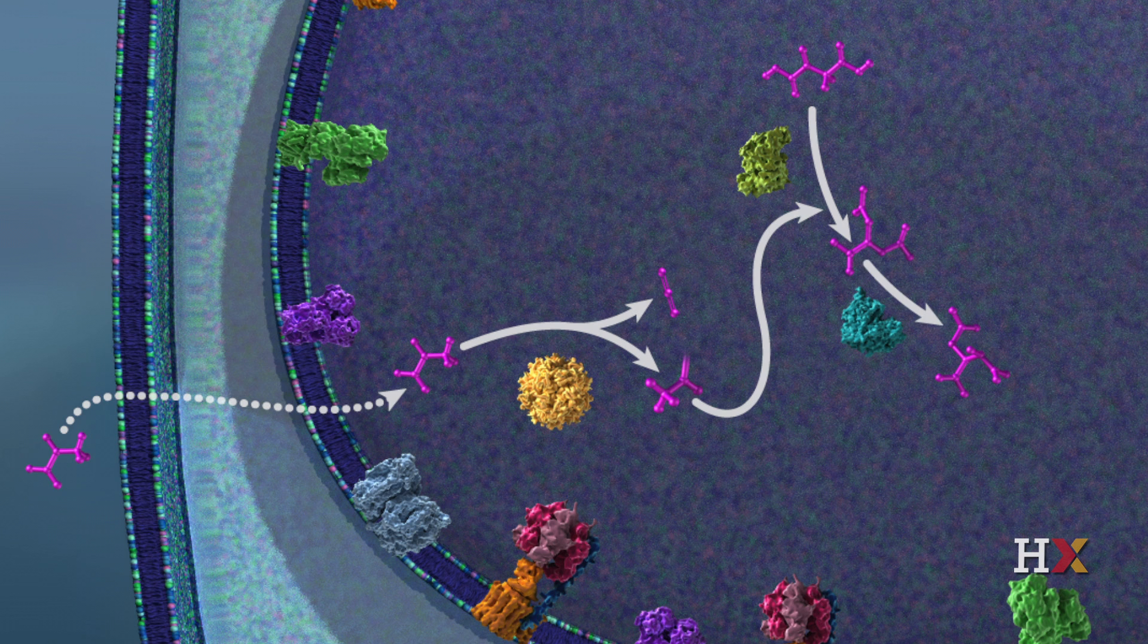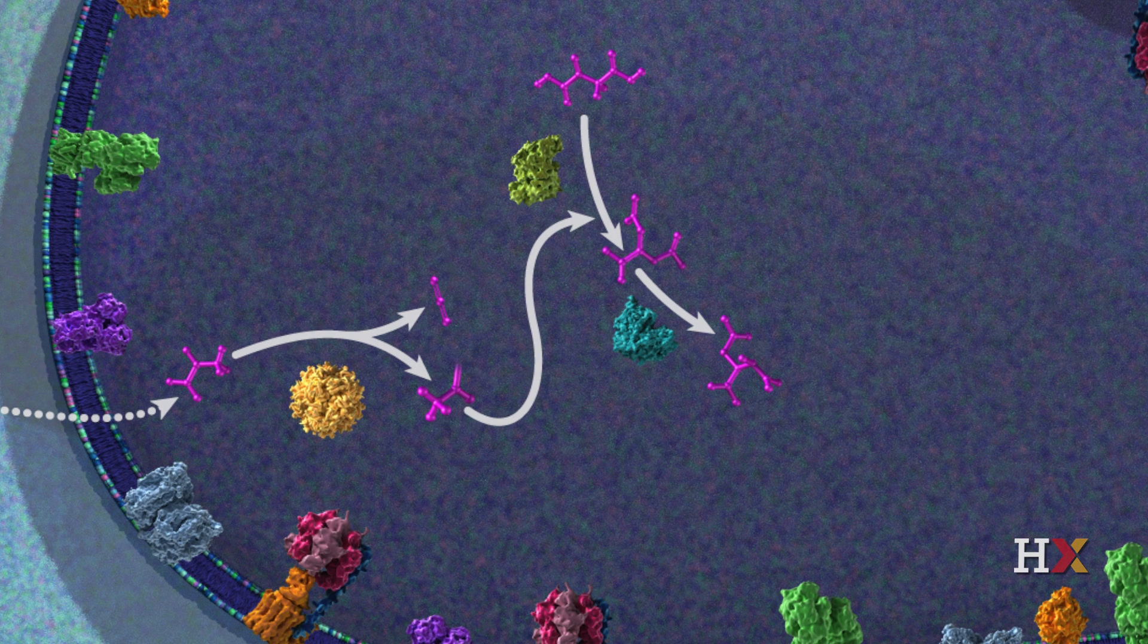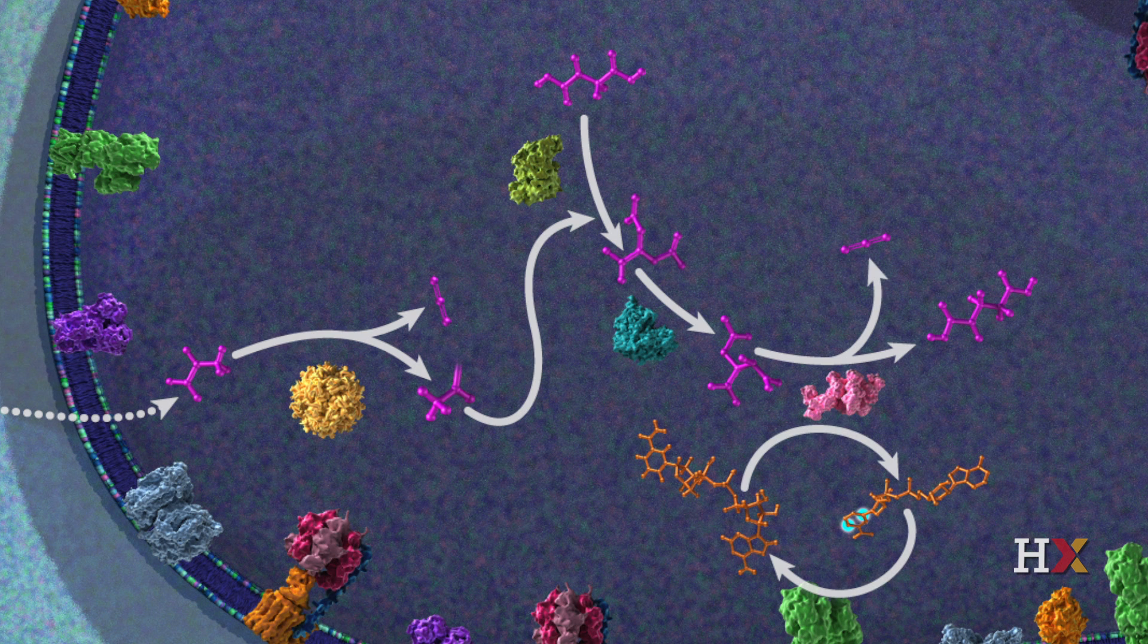In the second step, citrate is isomerized into isocitrate by aconitase. In the third step, isocitrate is oxidized by isocitrate dehydrogenase, generating the five-carbon molecule alpha-ketoglutarate. In the process, one carbon dioxide molecule is released, and one NAD plus molecule is reduced to NADH.